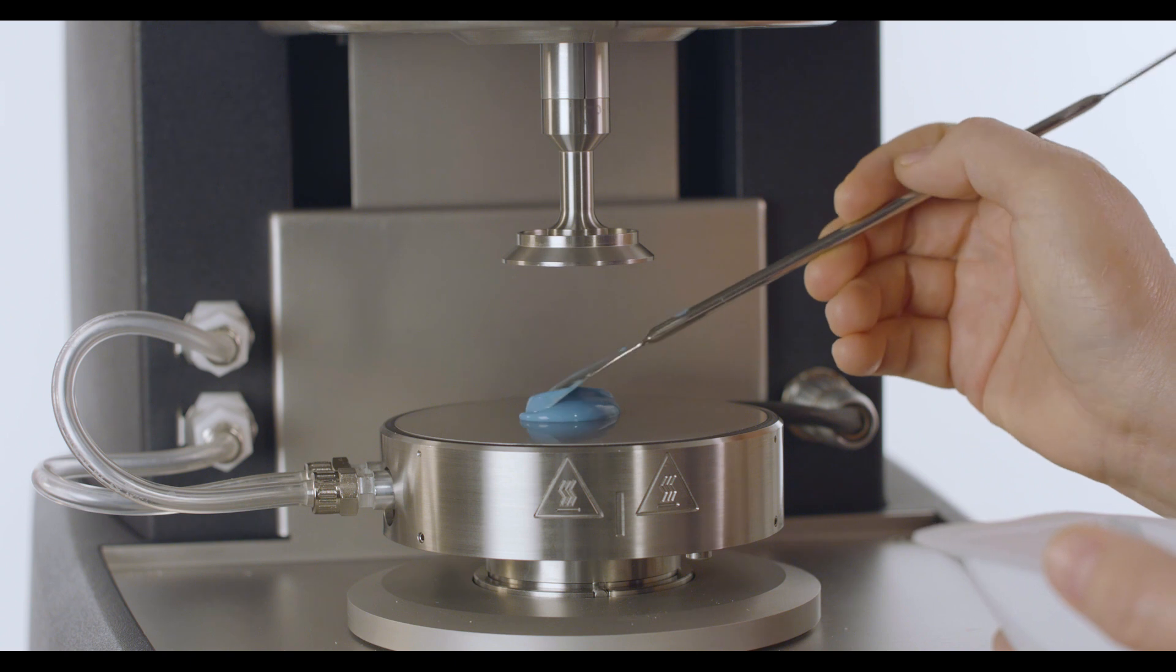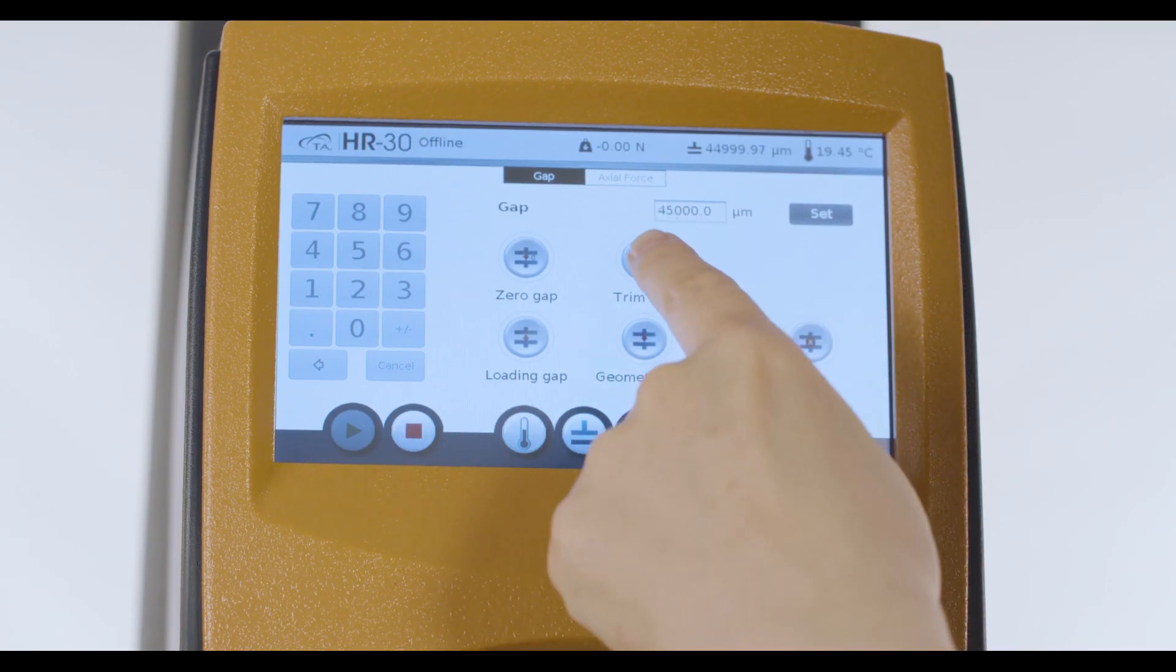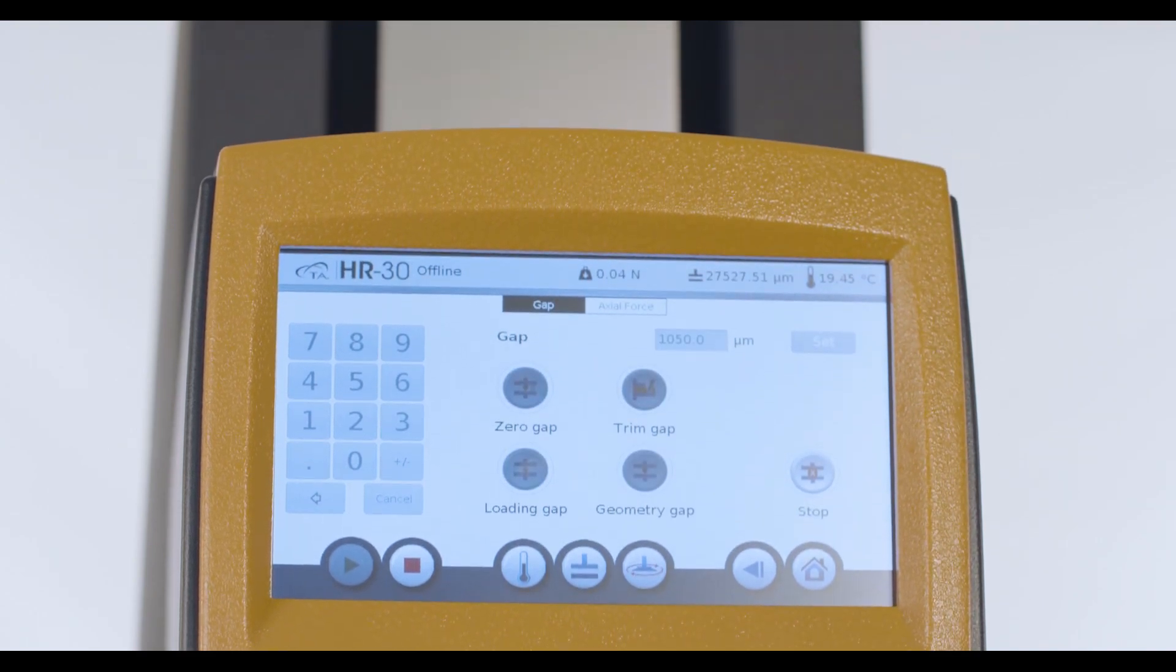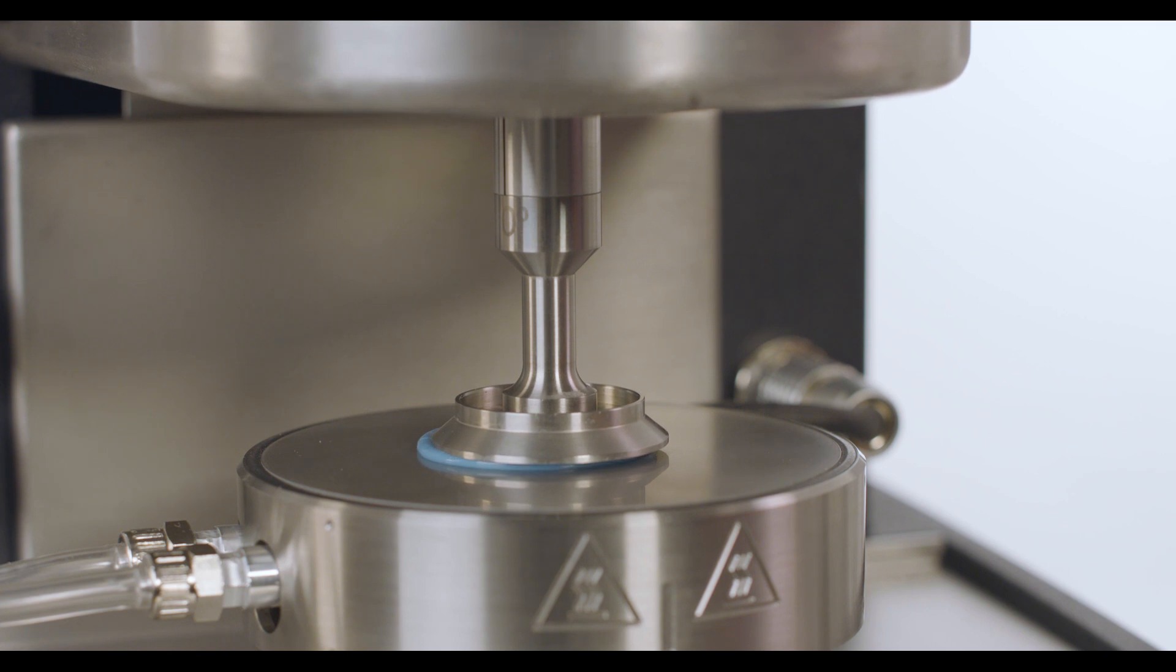Load your sample at the center of the bottom plate. Then, press this button to go to the trim gap. By default, the trim gap is set at a gap that is 5% above the final measurement gap.